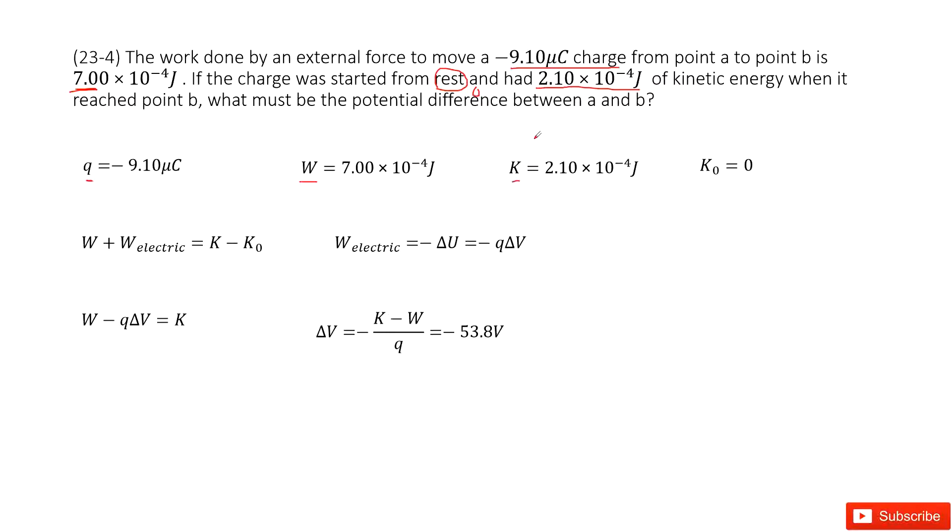Now it asks you what must be the potential difference between A and B. So how can we do that? We can consider, in this case, they tell you the work and the kinetic energy at initial and final. So very straightforward, we can consider the work-energy principle.